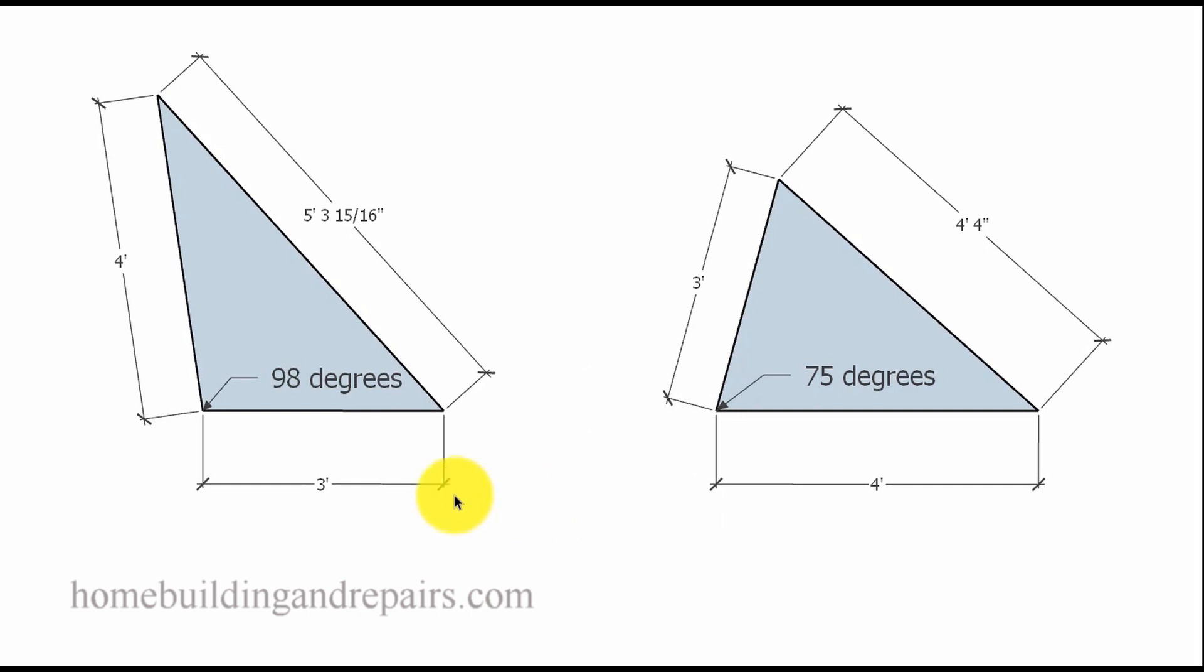And to give you an idea here, if I had 3 feet and I had 4 feet but the line was over to the left and we measured it, the hypotenuse and it was 5 foot 3 and 15/16 inches, then we would have a 98 degree angle, not a square.